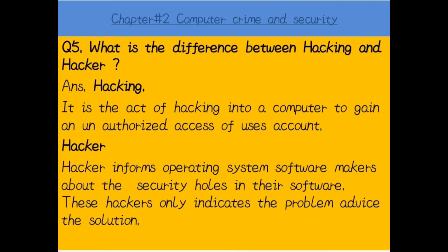Question number five: difference between hacking and hacker. Hacking کیا ہوتا ہے؟ Hacking is the act of breaking into a computer to gain unauthorized access to a user's account. Hackers دو طرح کے ہوتے ہیں: ایک جو different companies اپنی services لیتی ہیں تاکہ وہ company کو بتا سکیں کہ ان کے software میں کوئی security loophole تو نہیں — یہ positive hackers ہیں۔ اور کچھ hackers جیسے games کے hackers یا دوسروں کے user accounts کو hack کرنے والے — یہ different types of hackers ہوتے ہیں۔